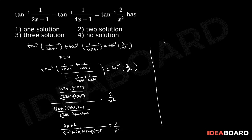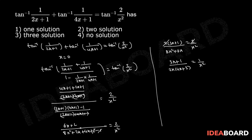This implies 2(3x+1) by (8x square plus 6x) equals 2 by x square. The 2's cancel. Then (3x+1) by taking 2x as common gives (4x+3), equals 1 by x square. The x's cancel. By cross multiplying we have 3x square plus x equals 8x plus 6, which implies 3x square minus 7x minus 6 equals 0.